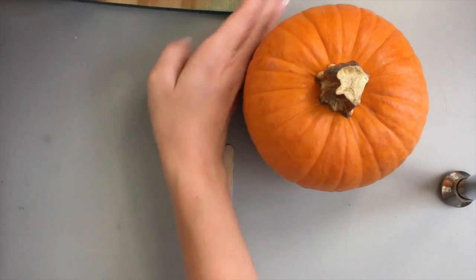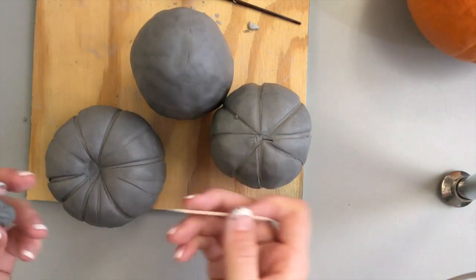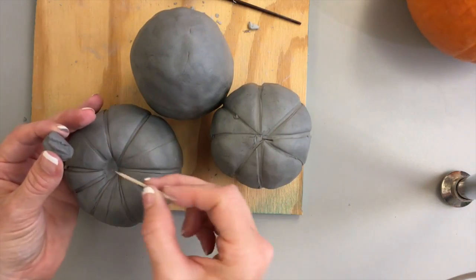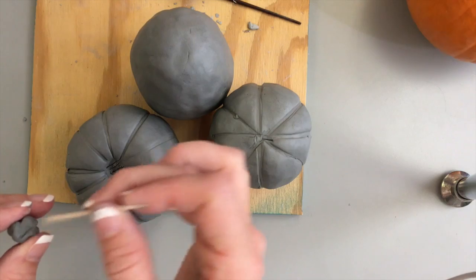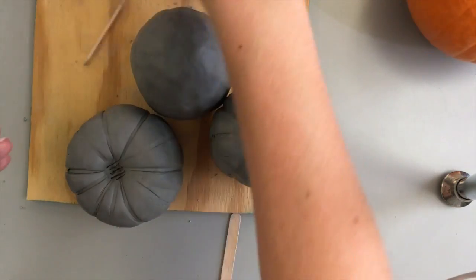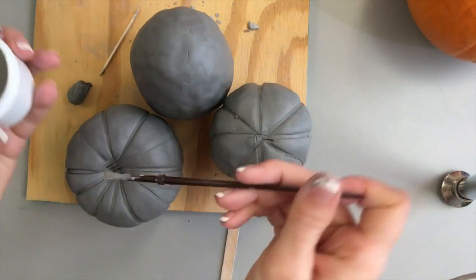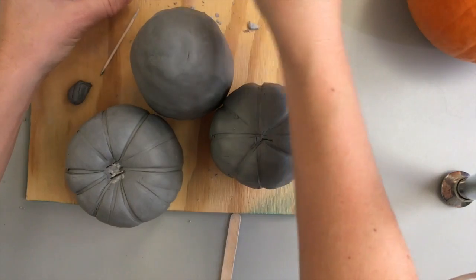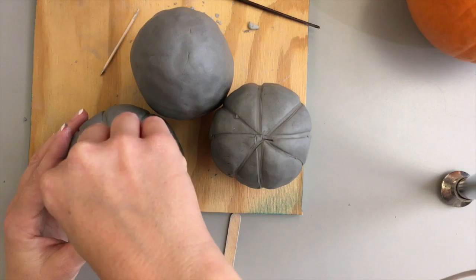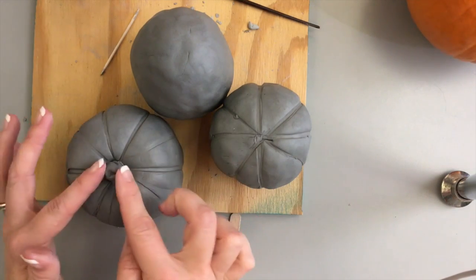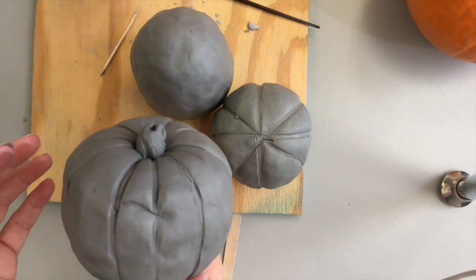Anytime you want to put two pieces of clay together, you have to score and slip. I'm gonna score, that just means scratch. I want this to be the bottom so I'm gonna score it and then use the slip in your little jar, just put a little dab of slip in there to act as the glue. That's scored, kind of mash it together. There is my stem.